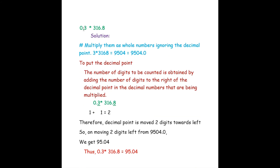The next question is 0.3 into 316.8. Same process: ignore the decimal points and multiply as whole numbers. 0.3 becomes 3 and 316.8 becomes 3168. 3 into 3168 is 9504, expressed as 9504.0.